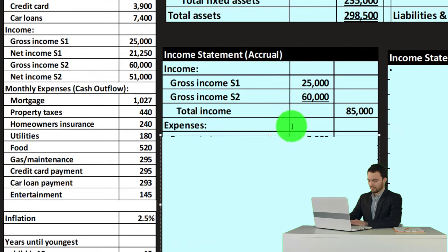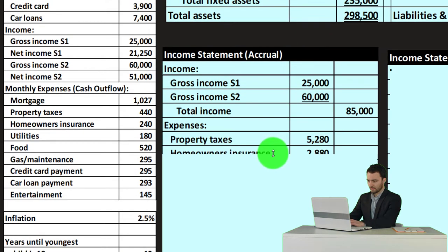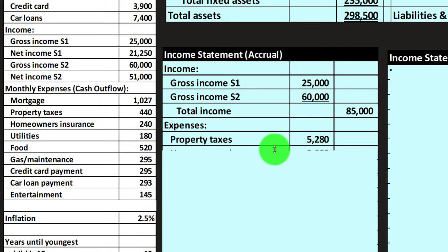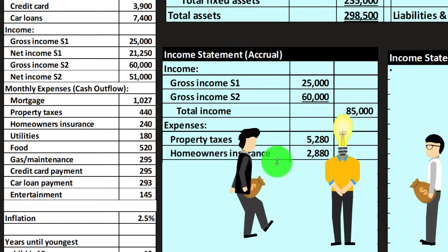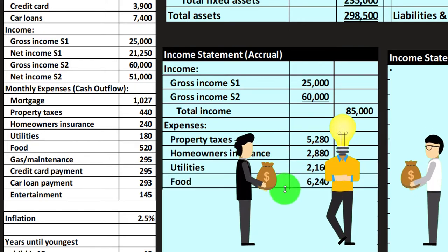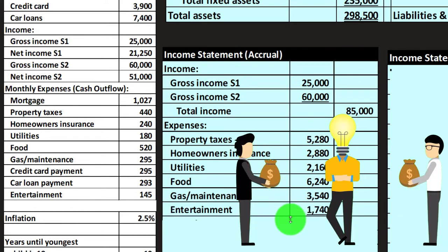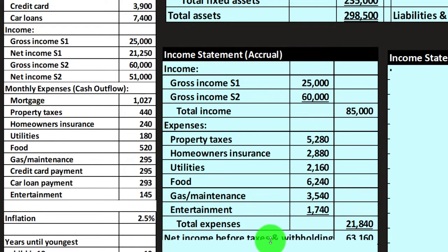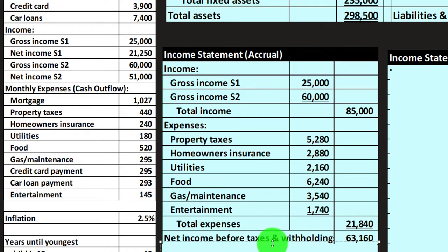Let's look at the income statement using the gross amount — the full amount shown on a pay stub — minus expenses we might take from the checking account, but categorizing them by what we paid for: property taxes, homeowners insurance, utilities, food, gas, maintenance, entertainment, and so on — giving us total expenses.